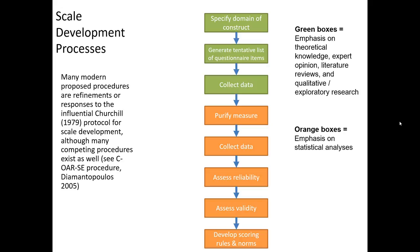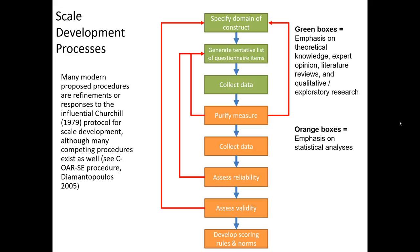Once you've reduced your number of scale items even further, you'll collect another larger set of data to work towards the final set of questionnaire items for your scale. At this stage, you'll engage in steps six and seven — assess the reliability of your instrument and assess the validity of your instrument — using a variety of different statistical procedures. Now it's likely, at any one of these stages, you're going to run into some problems indicating you've made missteps earlier in the process. That's what these red lines indicate here — feedback loops sending you back to earlier parts of the scale development process. If you get through this entire process, the very last step is developing scoring rules and norms.